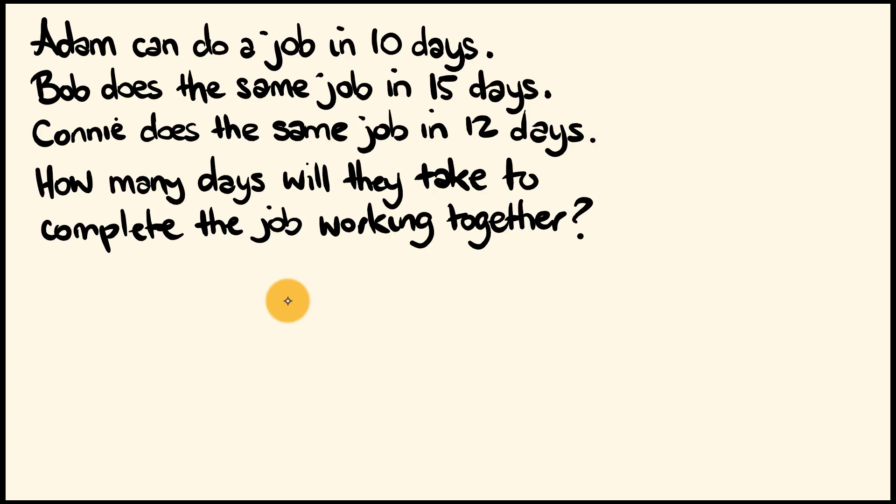So, we're going to use the same idea that we used in the first question. But we're going to just extend it a little bit. So, instead of just multiplying just Adam times Bob, we're going to multiply the days taken by Adam, Bob, and Connie all together. So, this is going to equal 10 multiplied by 15 multiplied by 12. Which is equal to, nice and simple, 15 times 12 is 180 times 10 is equal to 1,800.